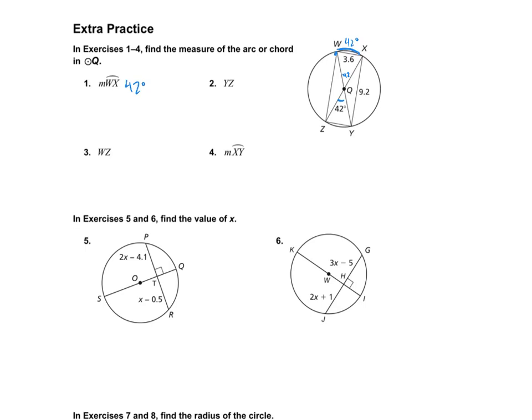Taking a look at the next one, we need to find the length of Y to Z. So this arc is 42 degrees. This arc will be 42 degrees. Since these two arcs are both 42 degrees, these will have the same measure, since these arcs in the same circle are congruent. So this will be 3.6.